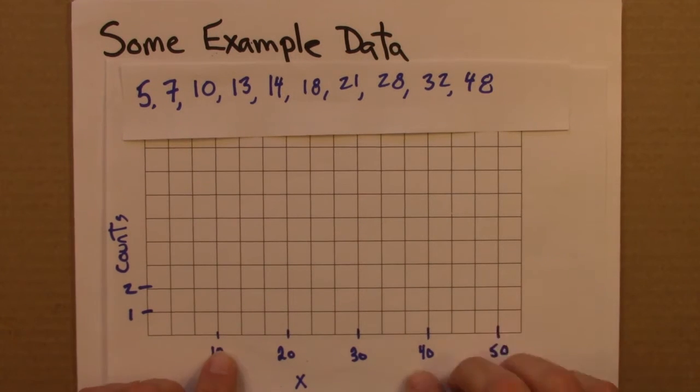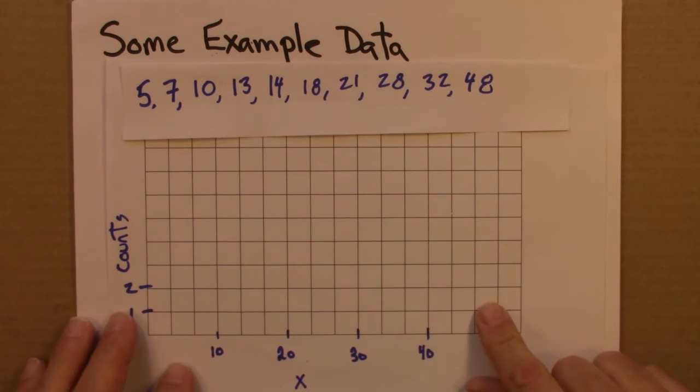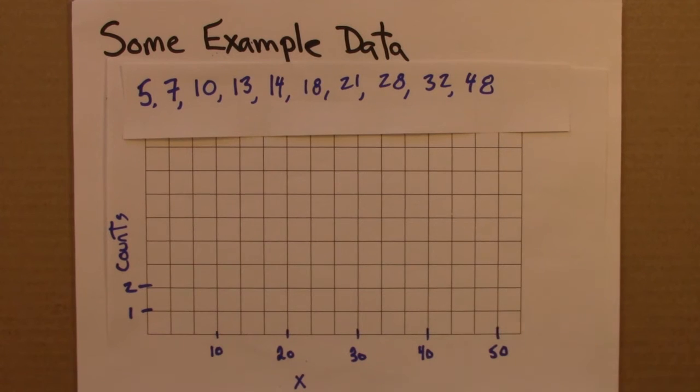And so I chose somewhat arbitrarily 10, 20, 30, 40, 50. And so each range is going to go from 0 to 3 and 1/3, 3 and 1/3 to 6 and 2/3 and so on. So that's kind of an unusual bin size, but there's nothing wrong with that, and it'll work just fine. So let's think about how we would build up a histogram.